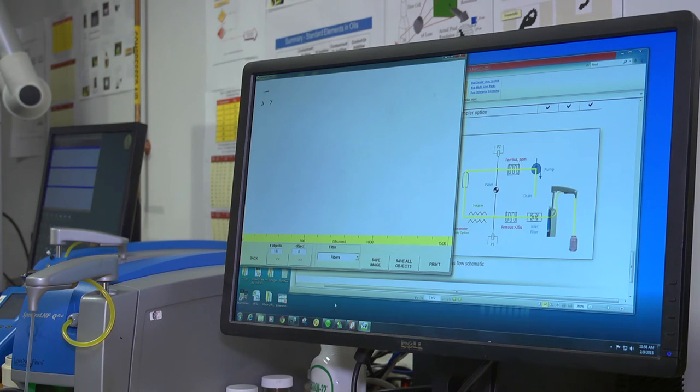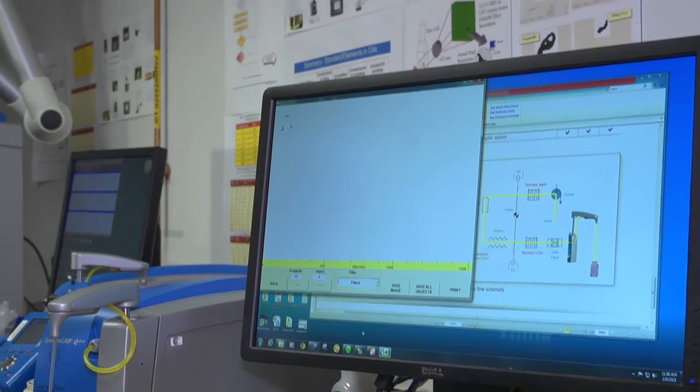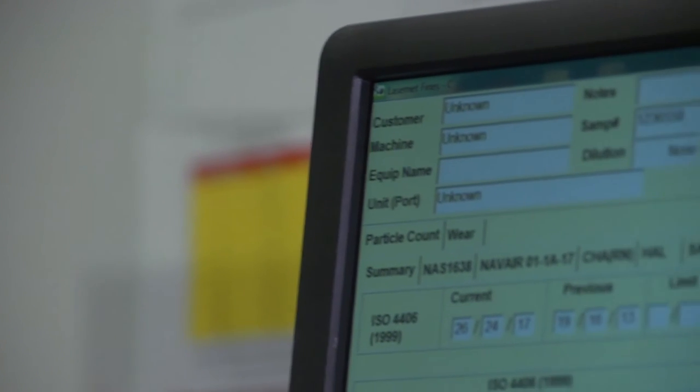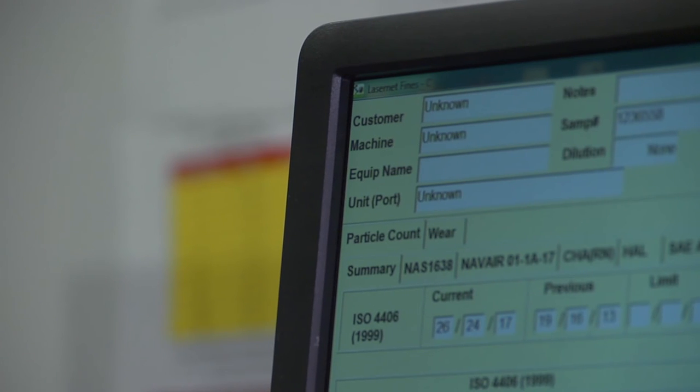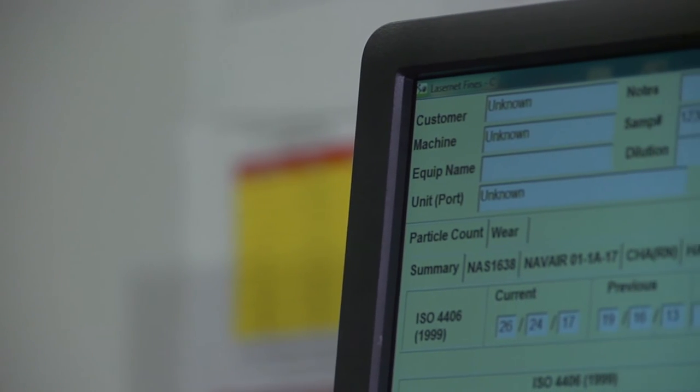And finally, you can look at fibers, which are these long strings, typically from mechanical seals that are starting to fall apart. So that's a brief overview of the wear classification and why we can actually generate actual images.